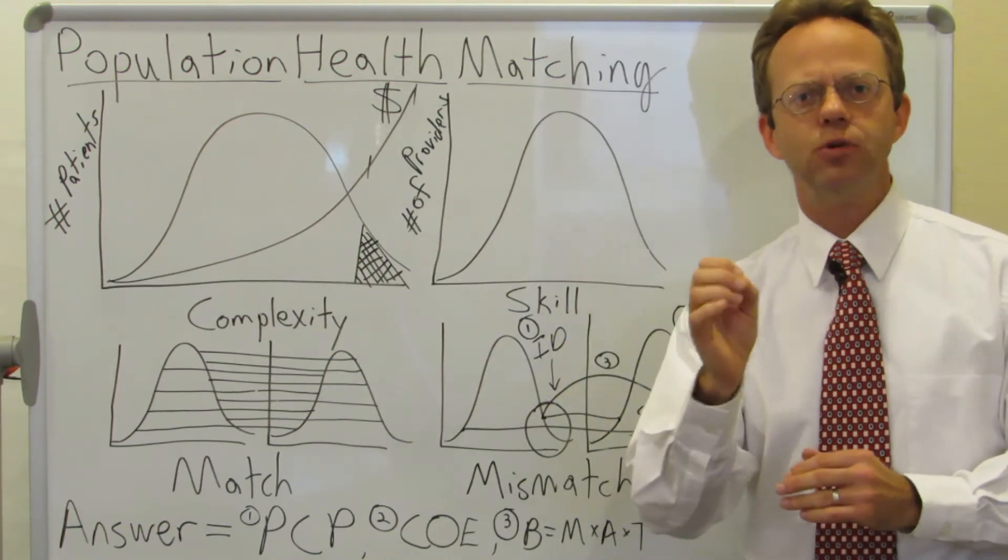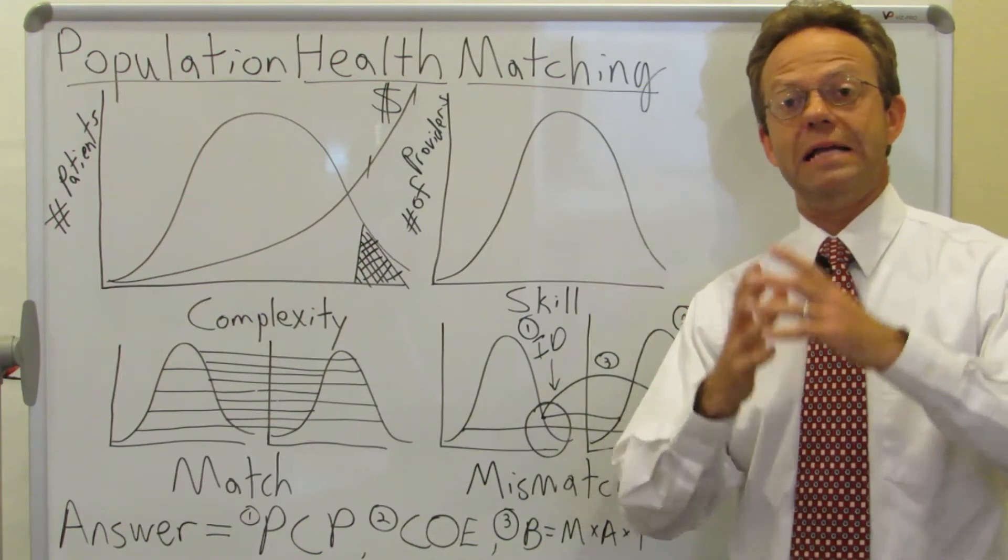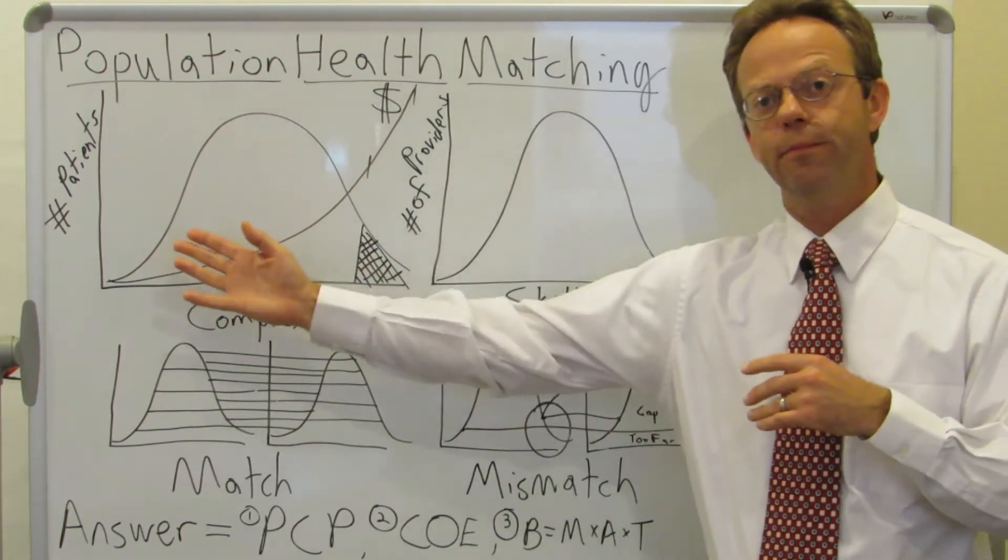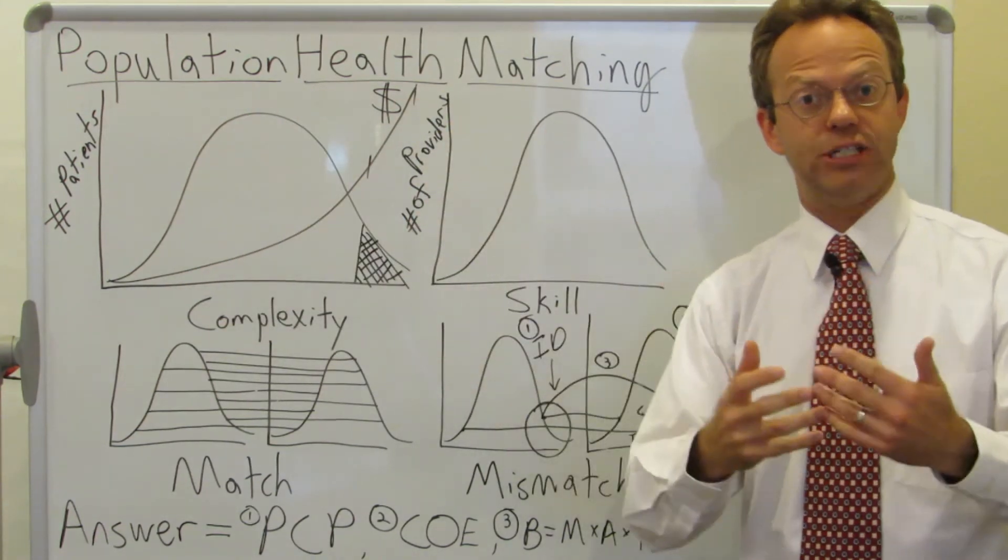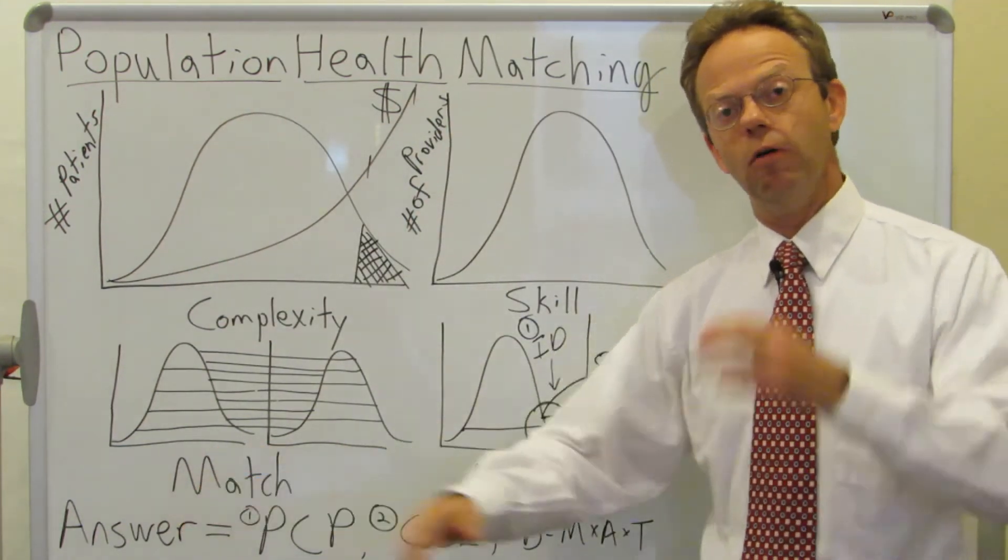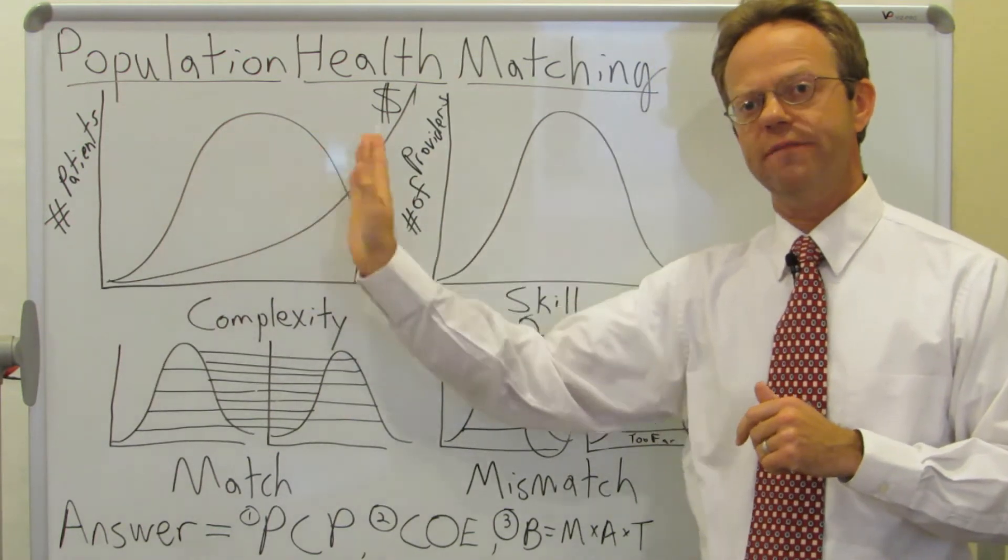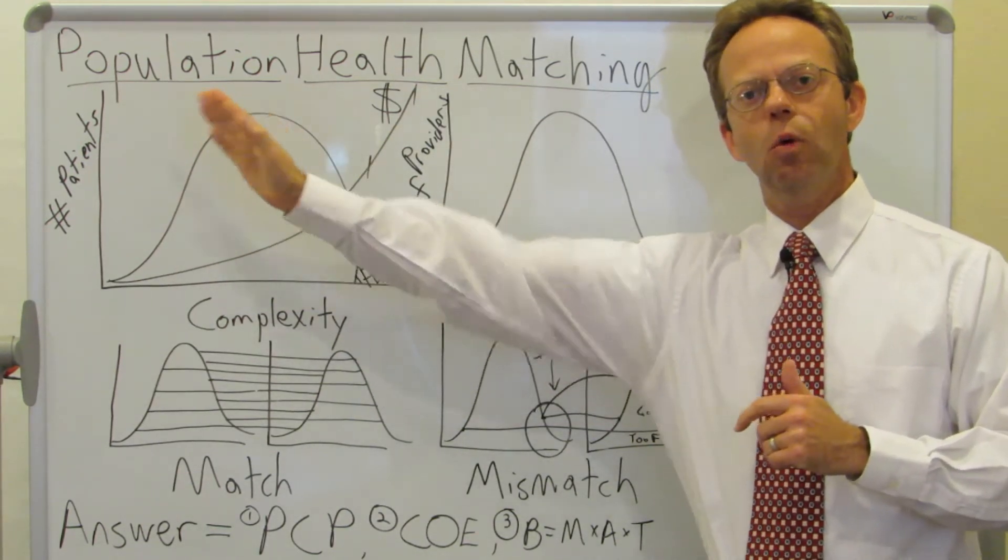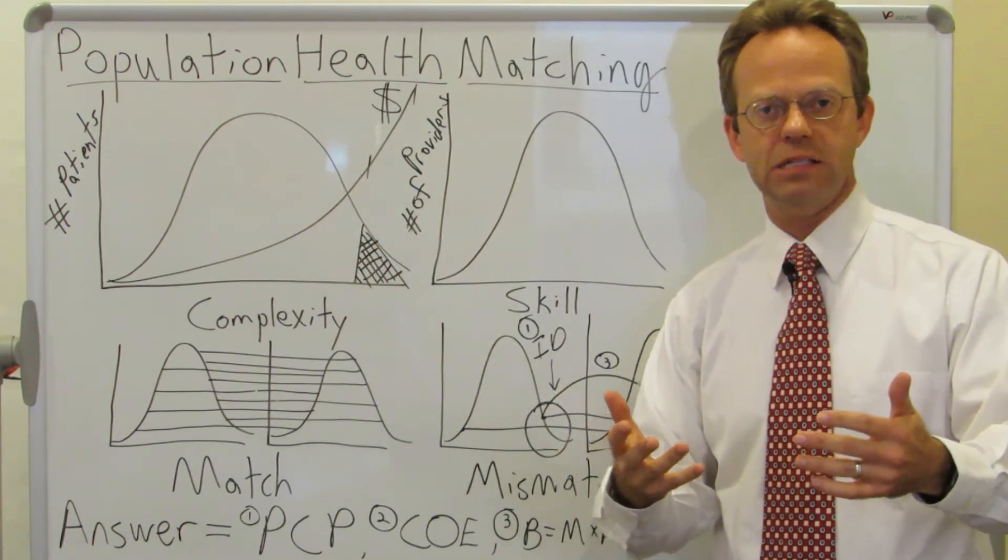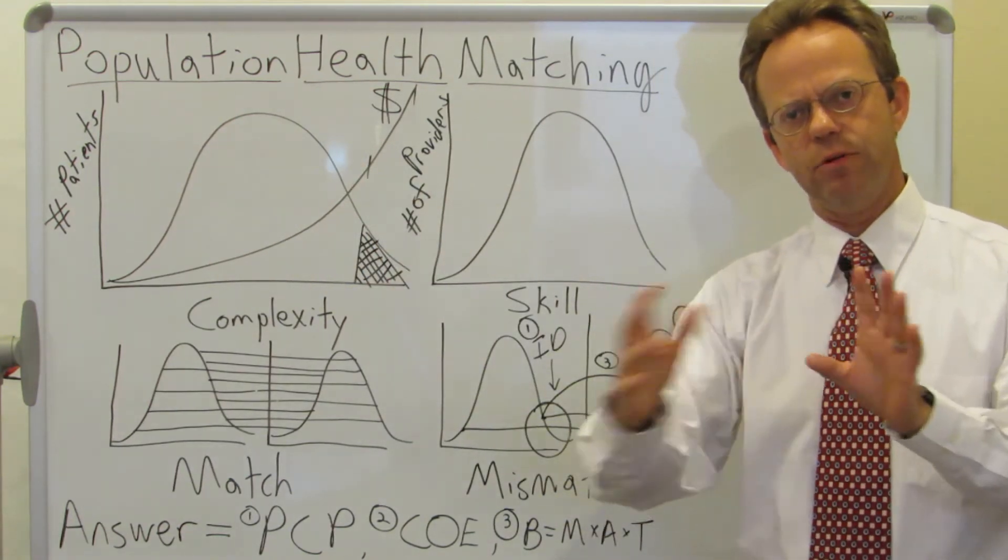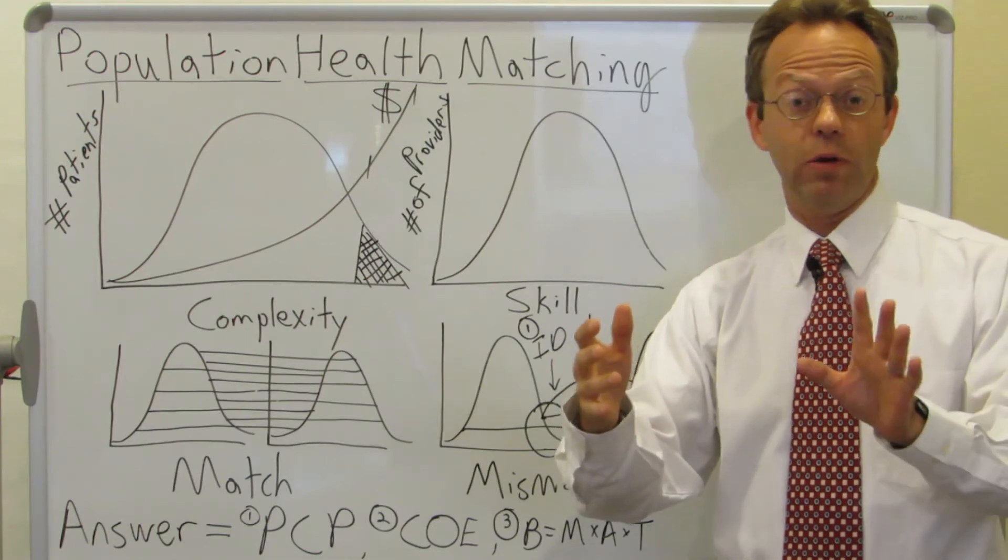So that's how it happens at the individual level. But what can an employer as a group do to putting the strategies in place to make that population health matching occur? And so they involve, one, primary care, right? Because you want to be able to identify and particularly place where people are in this continuum of complexity. And just being able to identify that with primary care is a great way to do that.